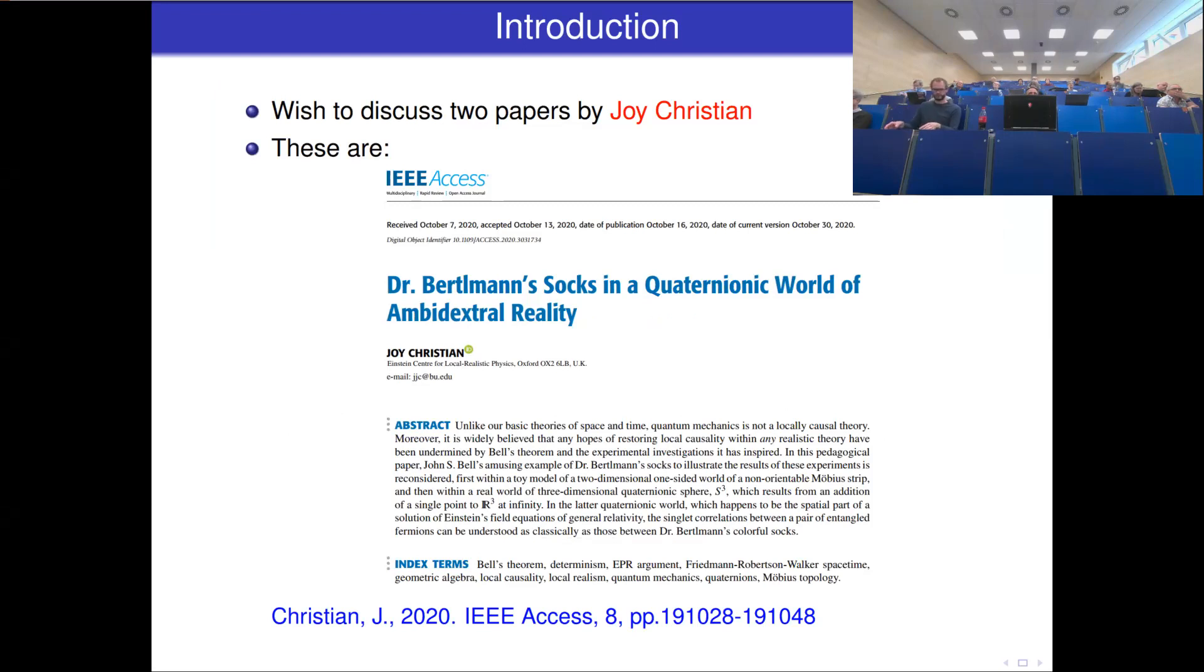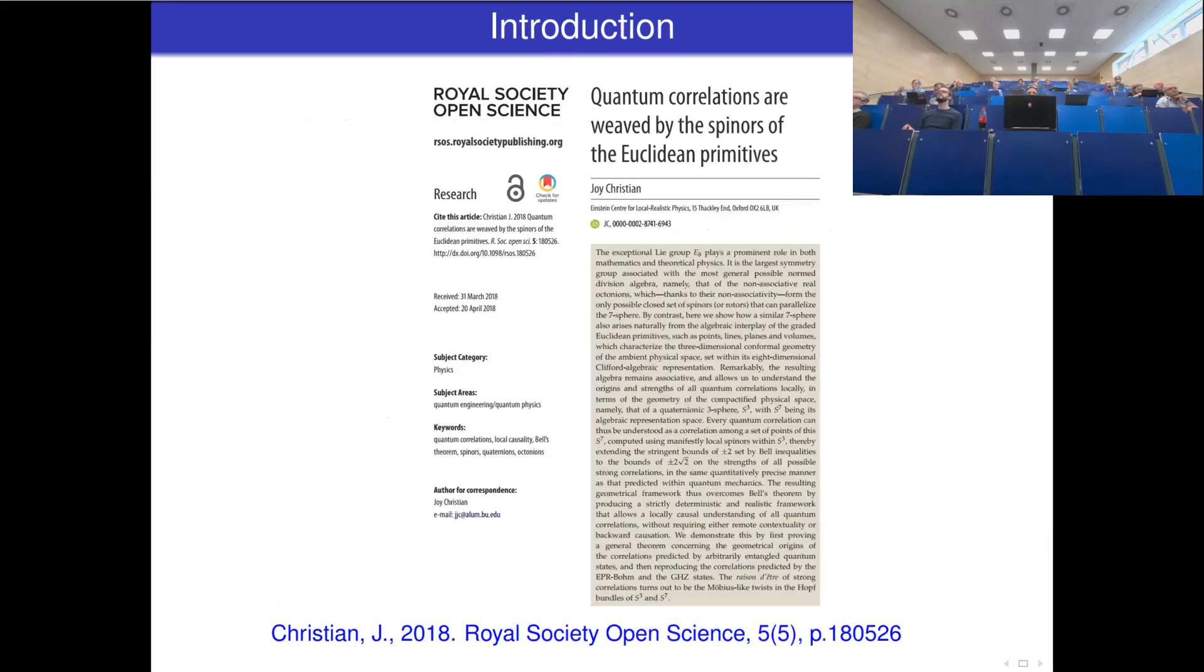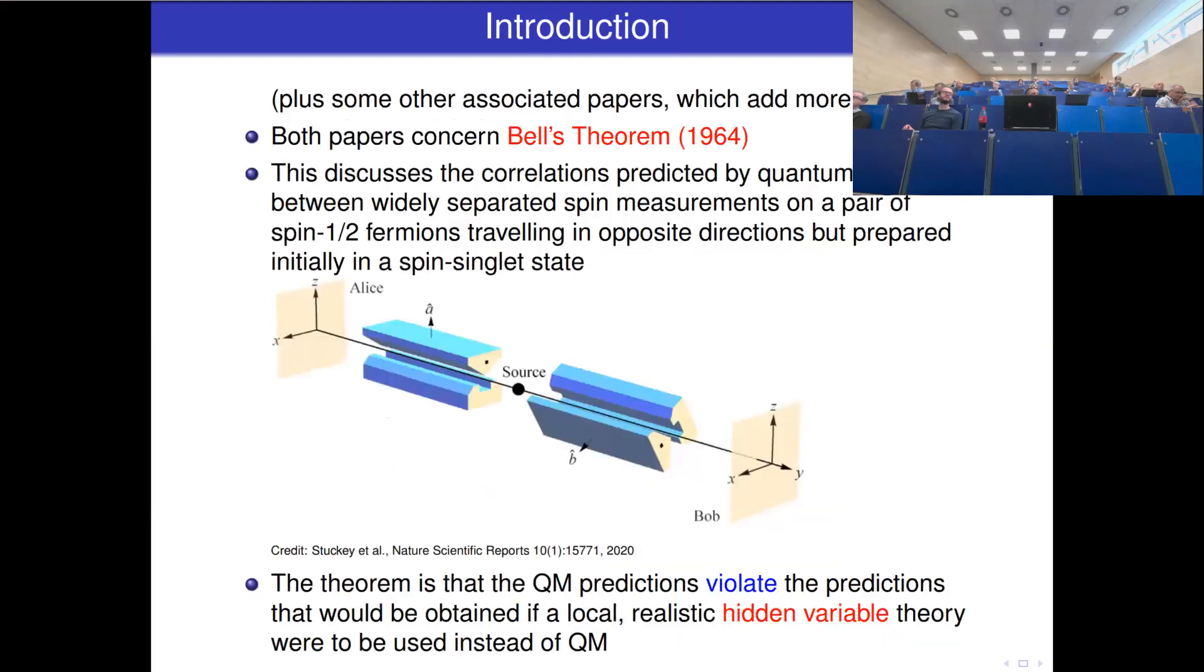Hello everyone. I want to discuss two papers by Joy Christian today. The first is called Dr. Bertlemann's Socks in a Quaternionic World of Ambidextral Reality, published in IEEE Access last year. And the second paper is called Quantum Correlations are Weaved by the Spinors of the Euclidean Primitives, published in Royal Society Open Science in 2018. Both papers concern Bell's Theorem and discuss the correlations predicted by quantum mechanics between widely separated spin measurements on a pair of spin-half fermions.